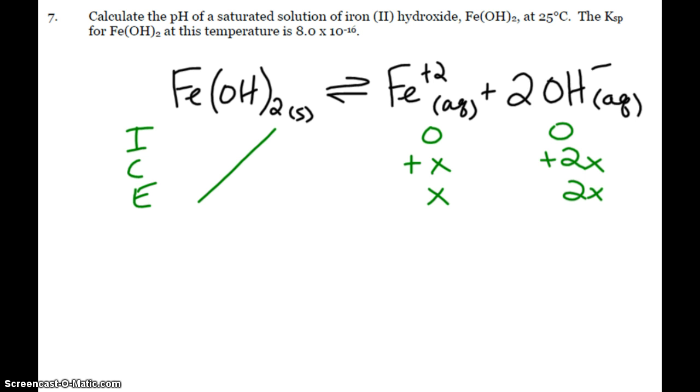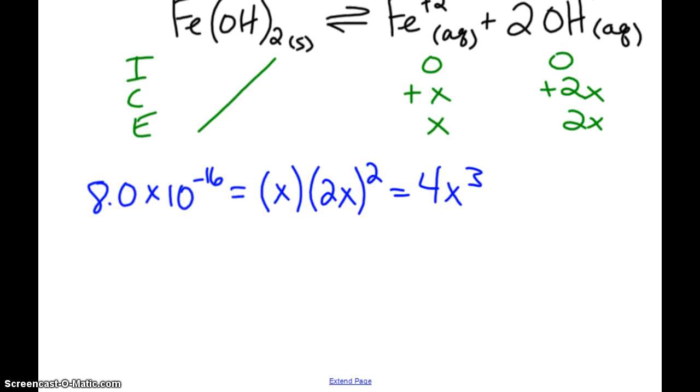So now my Ksp value, 8.0 times 10 to the negative 16th, equals concentration of iron times the concentration of hydroxide squared. So X times 2X squared, which is our familiar 4X cubed. When we solve for that, divide by 4, take the cube root, I get X equals 5.8 times 10 to the negative 6th.